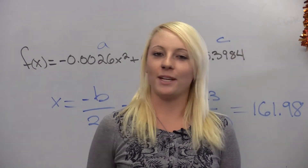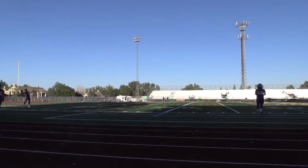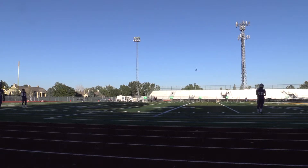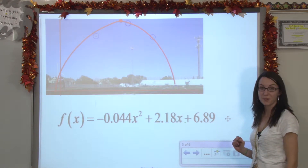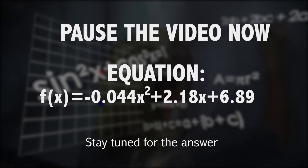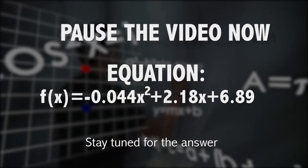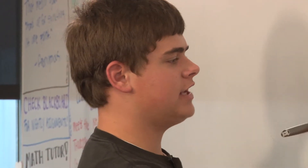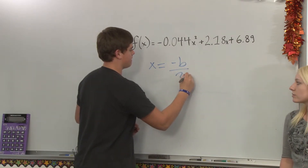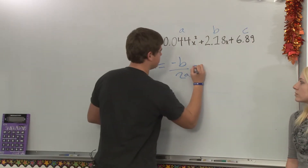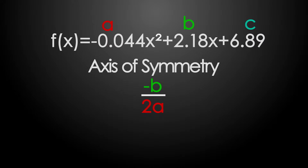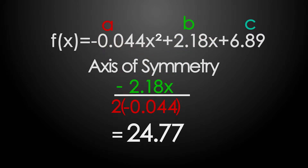Now that we've found the vertex of a parabola, can you? I'm Kyle Sixby, quarterback for Fort Collins. Can you guess how high this ball goes? Here's our equation. Can you find how high the football goes? Remember, the axis of symmetry can be found at x equals negative b over 2a. Here's our a, here's our b, and here's our c. So we simply plug those in, which equals 24.77.